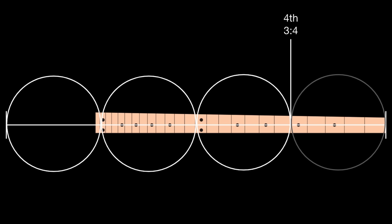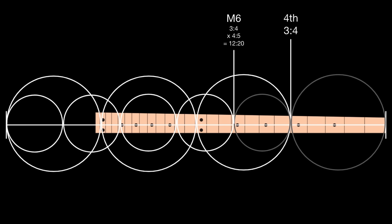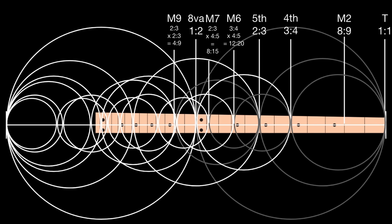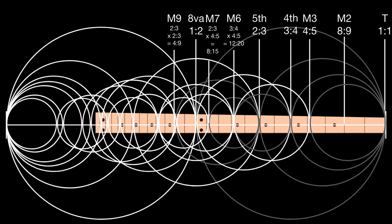The last note to derive is the sixth. We build a major chord on the fourth, adding the major third to the fourth: three-quarters times four-fifths equals twelve-twentieths, which simplifies to six-tenths. Now we have all the notes of the major scale. We don't need to add a fifth to the fourth because we already know that's the octave. So we have: tonic, major second, major third, fourth, fifth, major sixth, major seventh, octave.